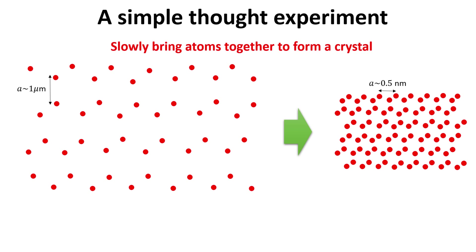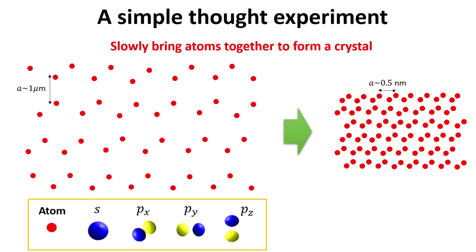Because the largely separated atoms of our initial hypothetical crystal do not interact with each other, we can say that the electrons will occupy the atomic orbitals of each individual atom at each unit cell of the crystal. For instance, electrons may occupy s, px, py, or pz states on each unit cell in this limit.